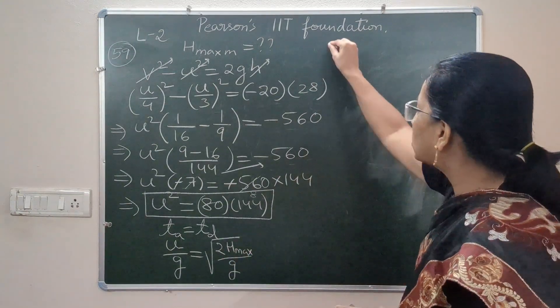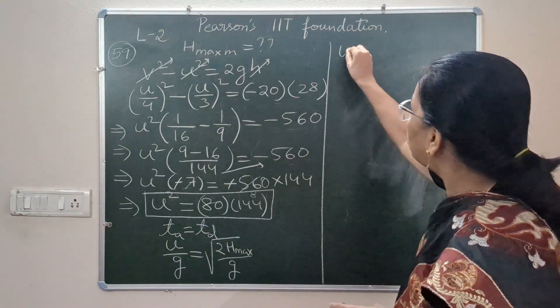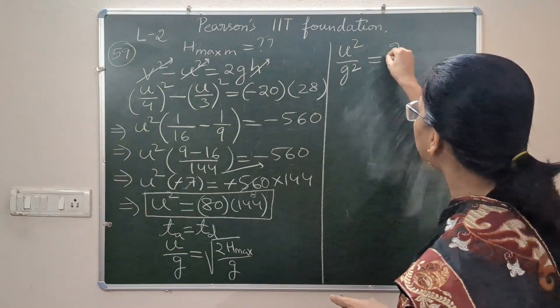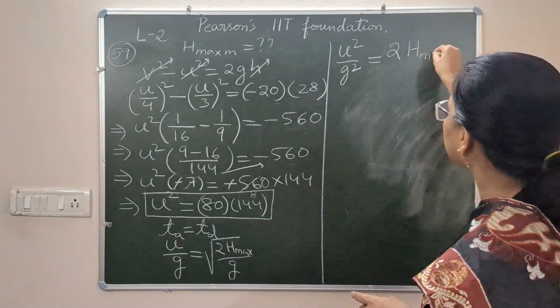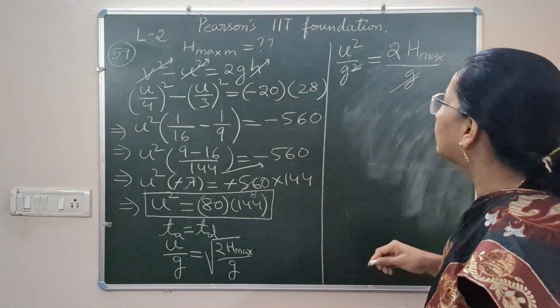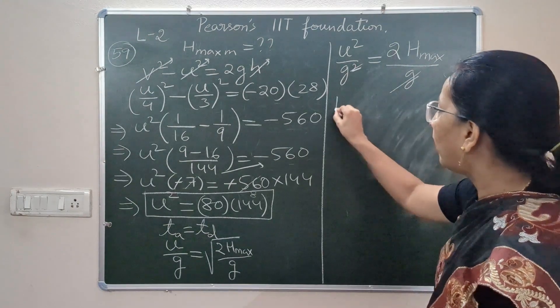So squaring on both sides we will get u²/g² is equal to 2h_max (h_max is our requirement) by g. Then what things cancel? Let them cancel. And then h_max.